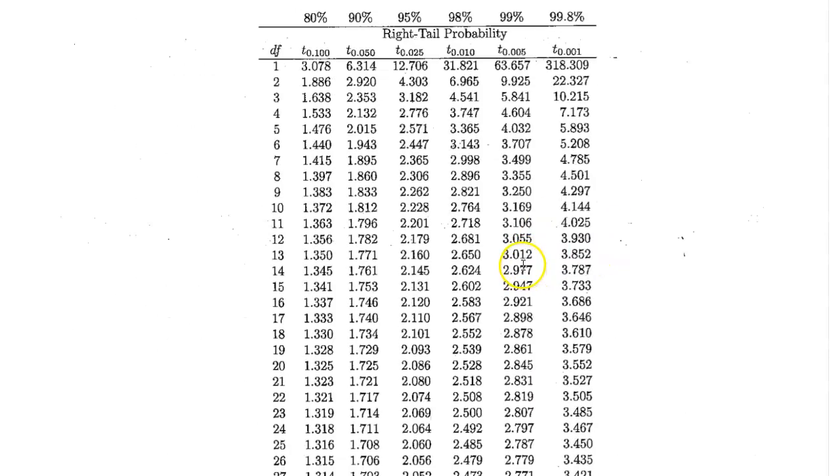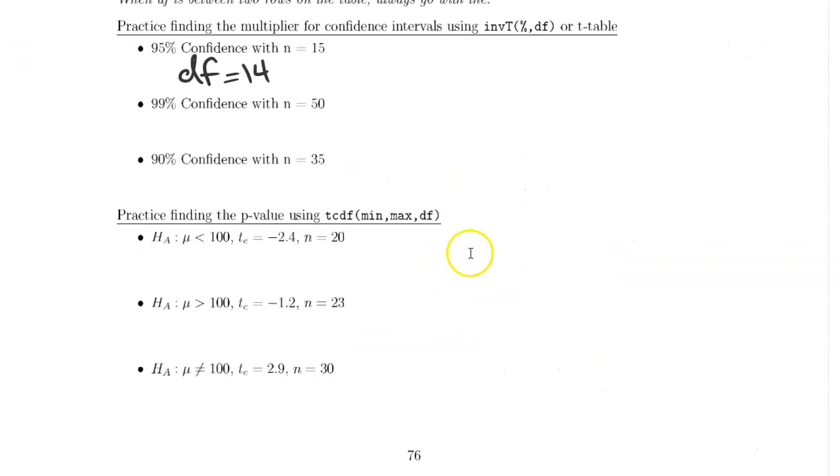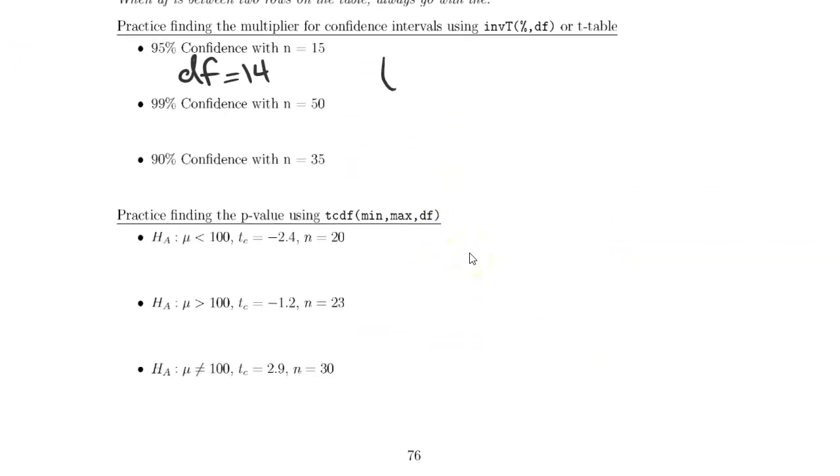If we look at the table, we find 14 degrees of freedom. And then I want to find the number corresponding to 95% probability, which is going to be this number right here. So t-star is equal to 2.145.